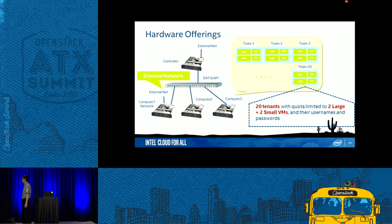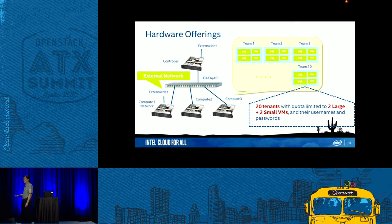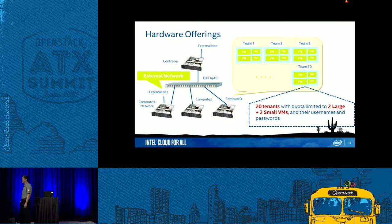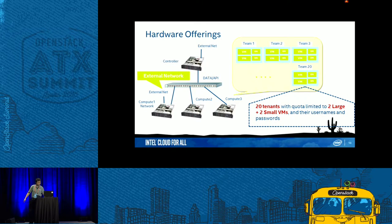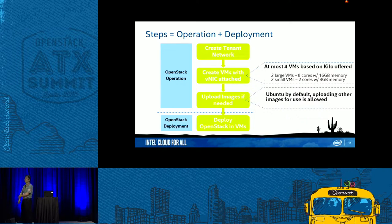For the hardware settings, we donated a rack containing several servers connected by a switch. One key difference is that we did not provide physical hardware to the students — we provided virtual machines. Students had to deploy OpenStack on top of OpenStack using nested virtualization. Each team received at most four virtual machines — two large and two small — to deploy the different nodes.